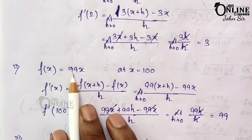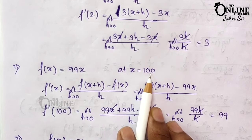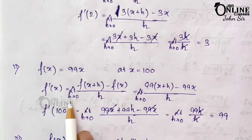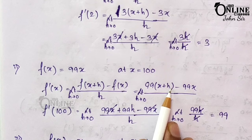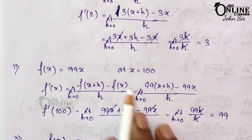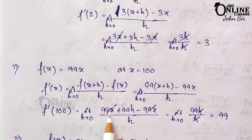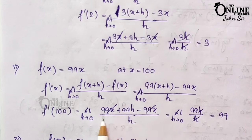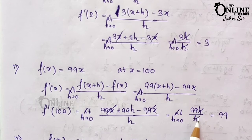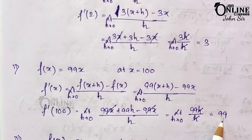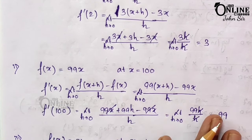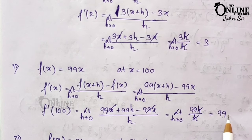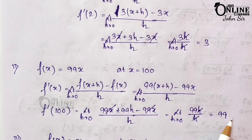Number 2: f(x) = 99x at x = 100. By definition, f'(x) = limit h→0 of [99(x+h) - 99x] / h. This gives [99x + 99h - 99x] / h = 99h/h = 99. As there is no x remaining, 99 is the final value. There is no need to substitute x = 100, so 99 is your final answer.